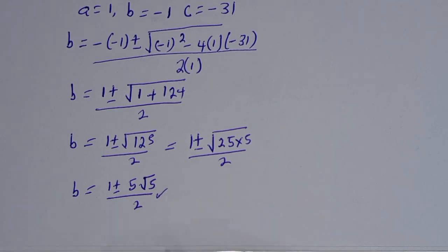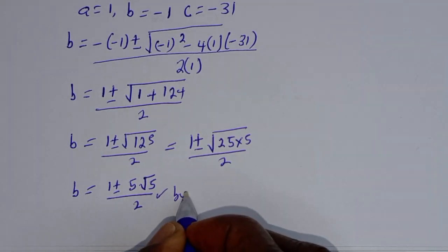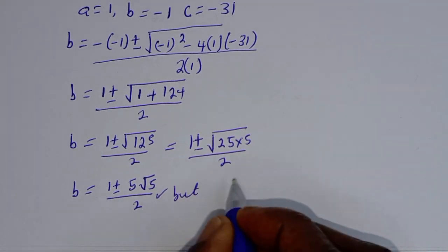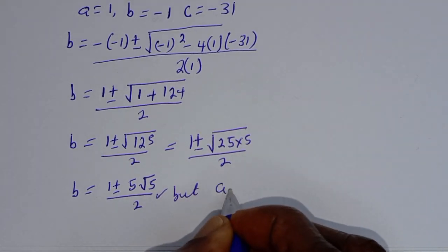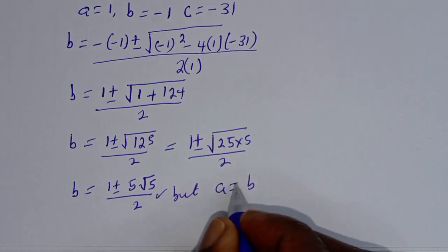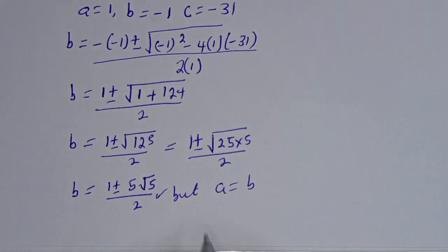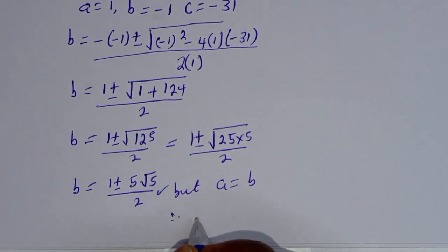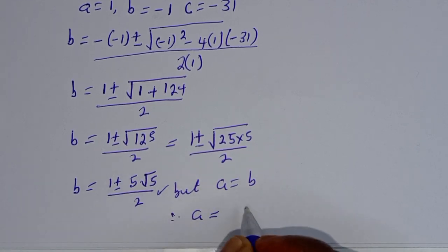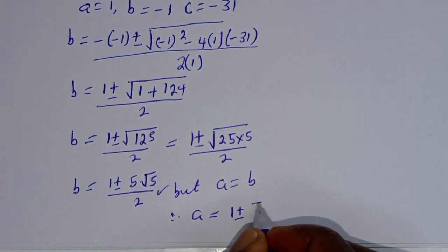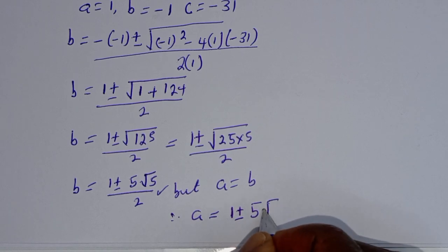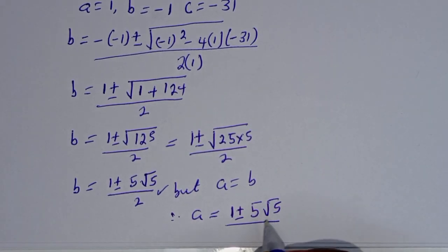This is the value of B. Since we know A equals B from the first case, A is also equal to (1 plus or minus 5 root 5) over 2.